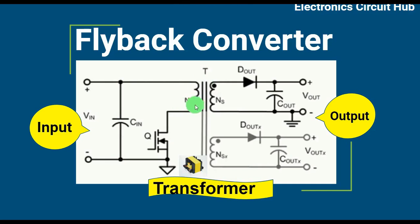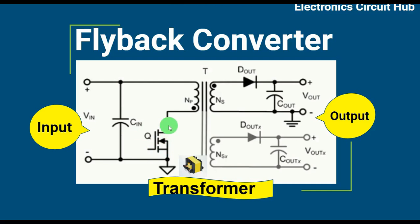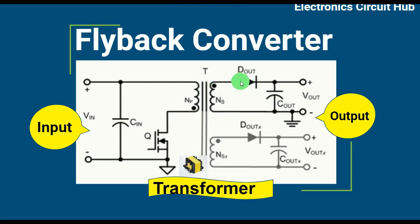Then we have the transformer. This side is called the primary side of the transformer, or primary windings of the transformer. This is called the switch, which is made by a MOSFET. On the secondary winding of the transformer we have the output diode and output capacitor. This flyback converter has two windings: V out and V out secondary.